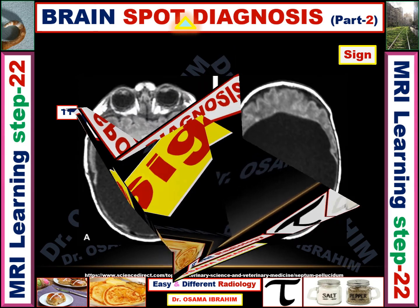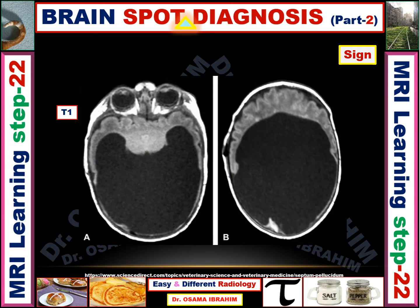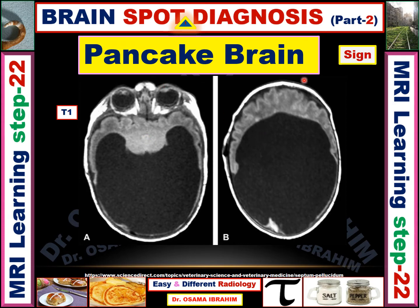Sign 7. This is a brain T1 without contrast for a pediatric age group, and also this is the same patient. The sign here is different and is called the pancake sign, or pancake brain sign.